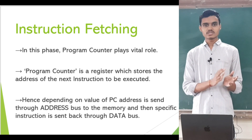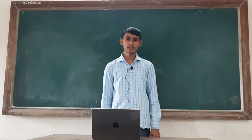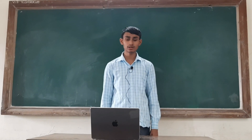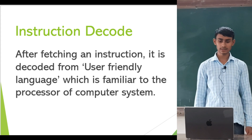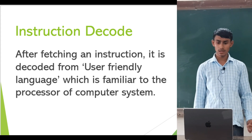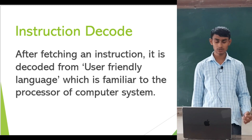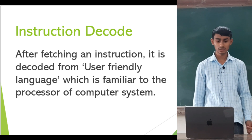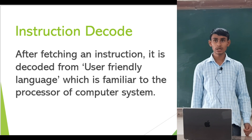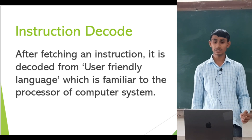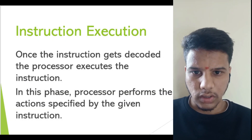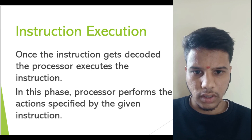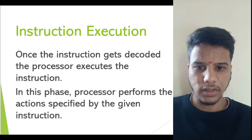Myself Bhavik Naik, and now I am going to explain what the instruction decoder is. The instruction decoder of a processor is a combinatorial circuit — sometimes in the form of read-only memory (ROM) and sometimes as an ordinary combinatorial circuit. Its purpose is to translate an instruction code into the address in the micro memory where the microcode for the instruction starts. Once the instruction gets decoded, the processor executes it, performing the action specified by the given instruction.